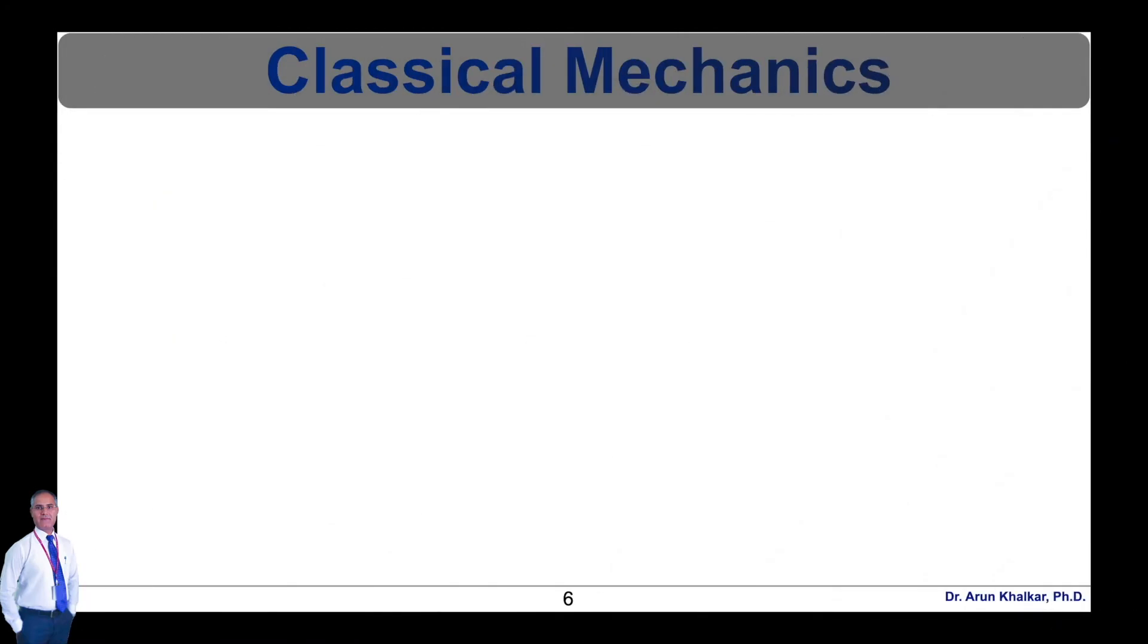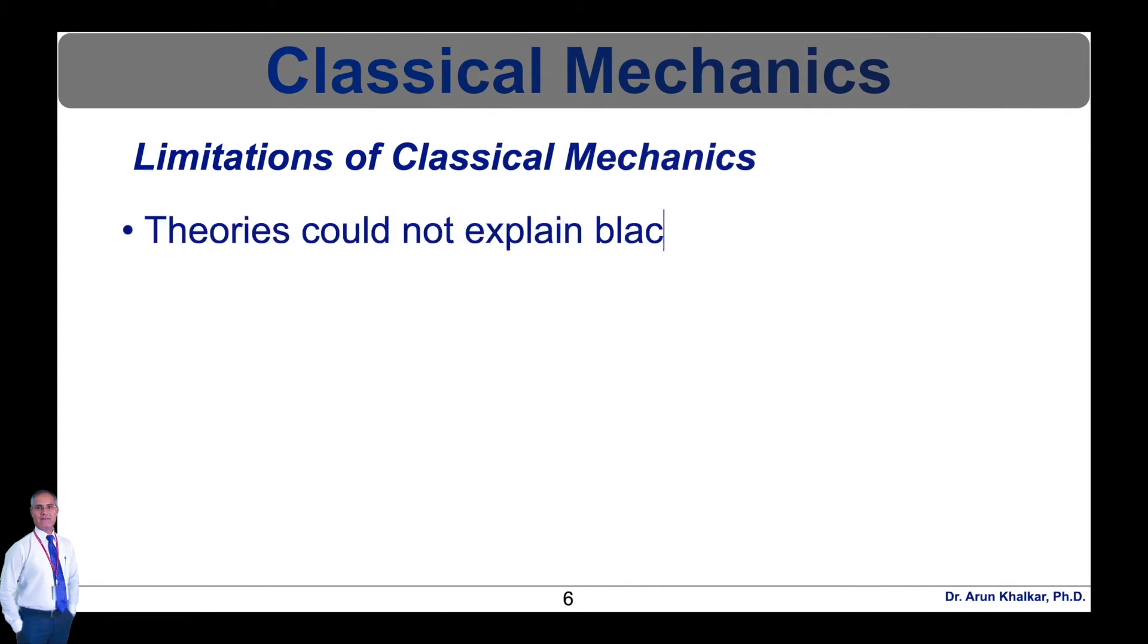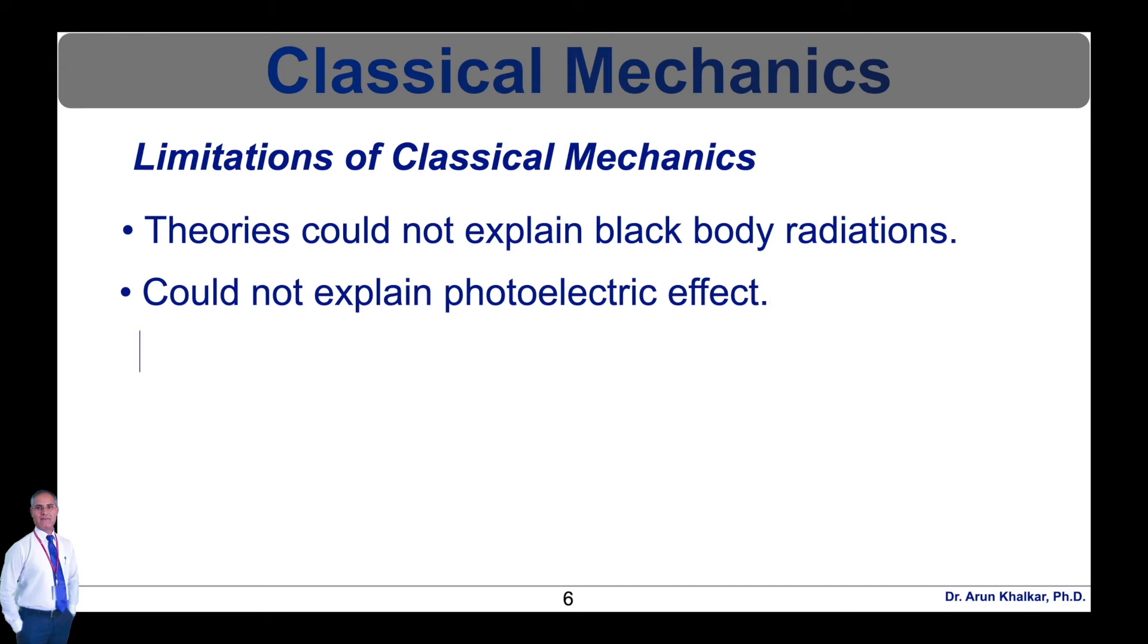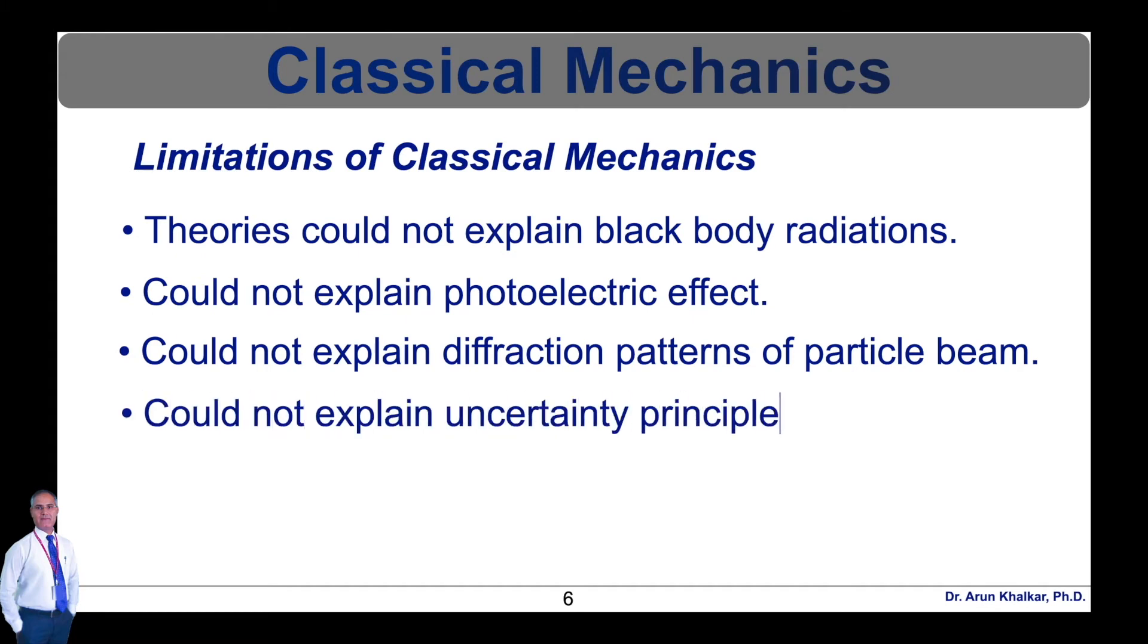In classical mechanics there are several limitations. Classical mechanics theories could not explain black body radiation, photoelectric effect, or diffraction patterns of particle beams. It could not explain the uncertainty principle and cannot explain atomic spectra. These are the important limitations of classical mechanics.